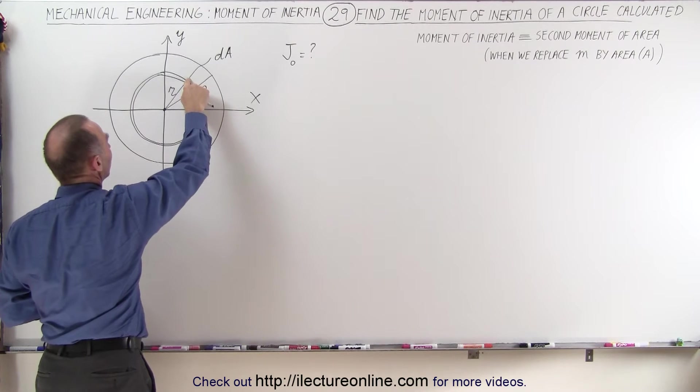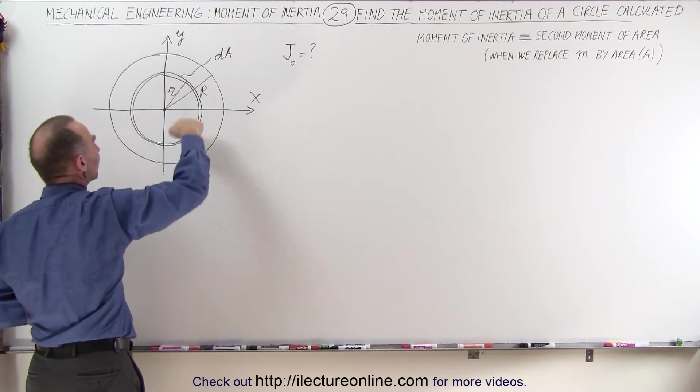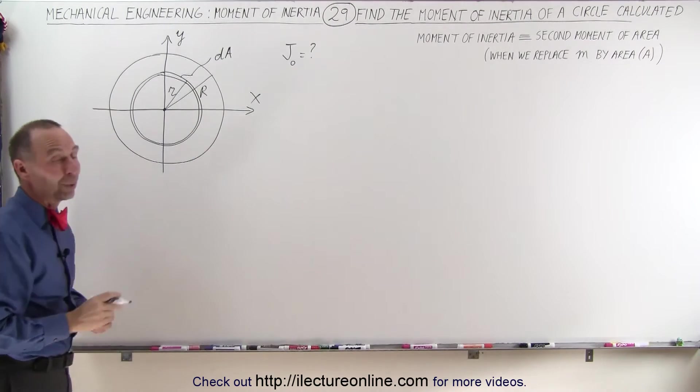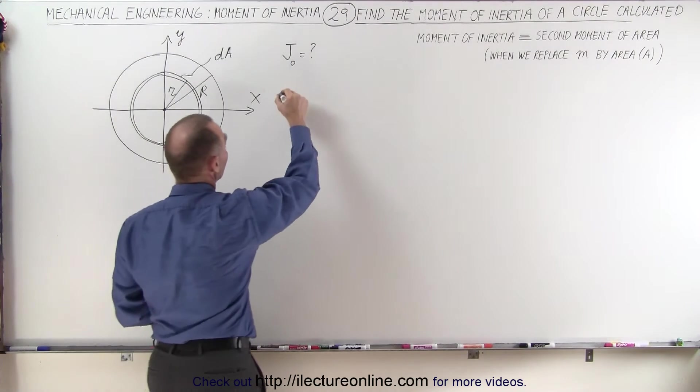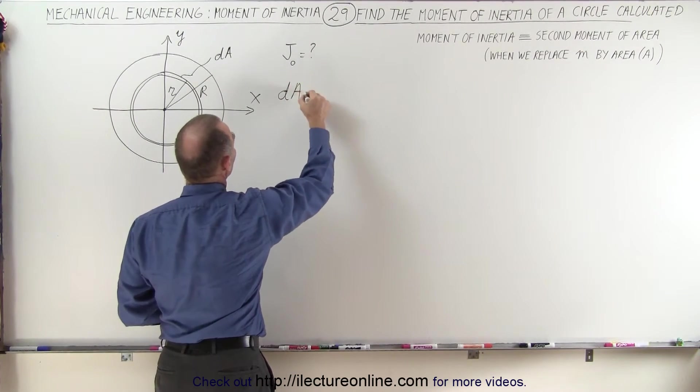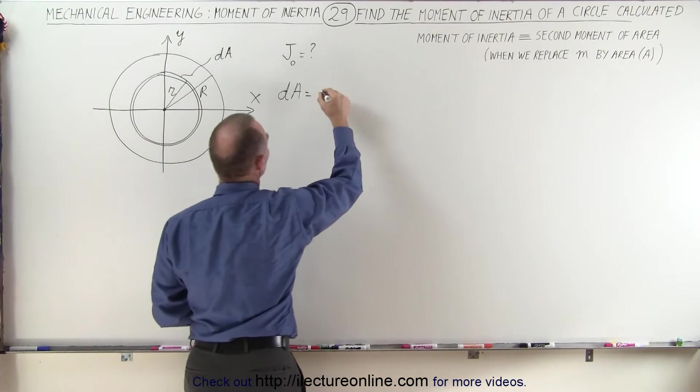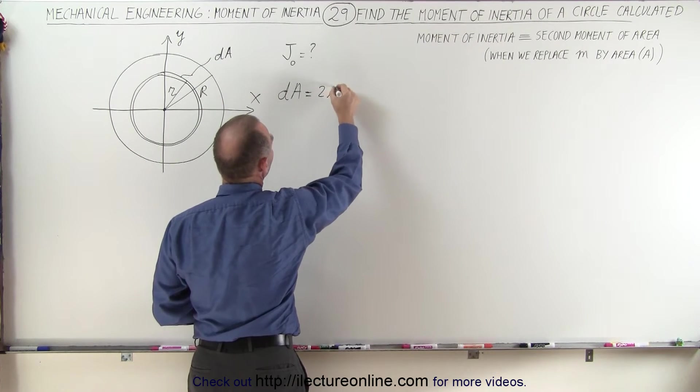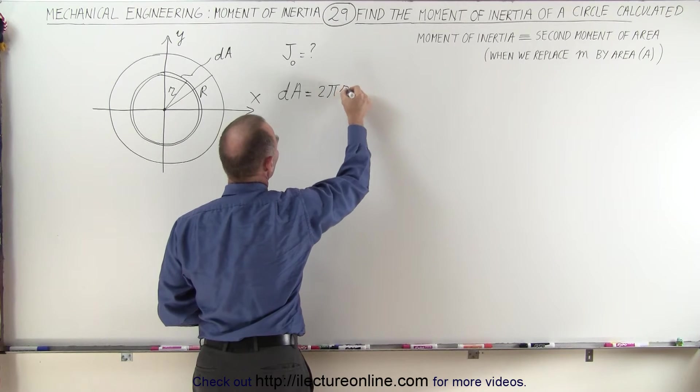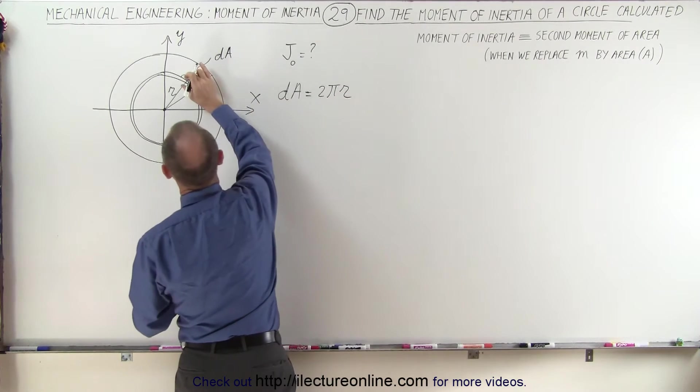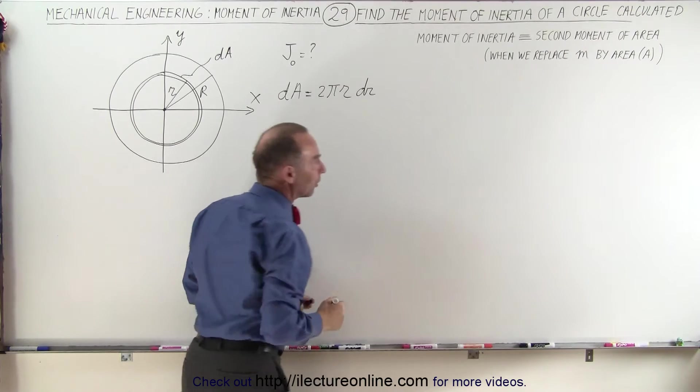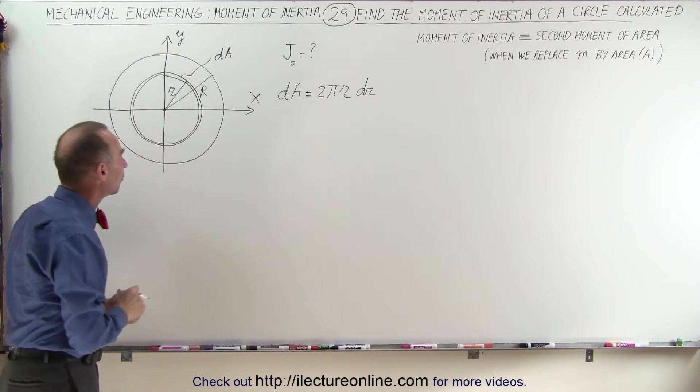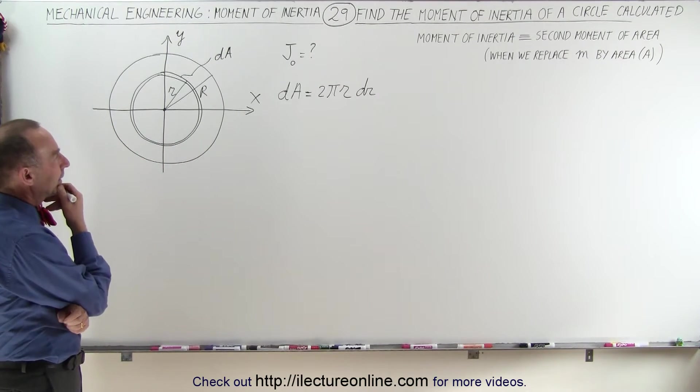And DA is the, well, maybe I should put that somewhere else so it doesn't get confusing. And the DA is this little area element. We can define DA as follows. DA is equal to the circumference of that, which is 2 pi times the variable r, the small r, times the thickness of that. And let's call that the very small little dr, a very small thickness dr.